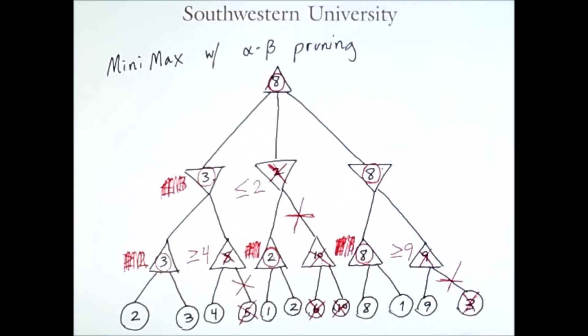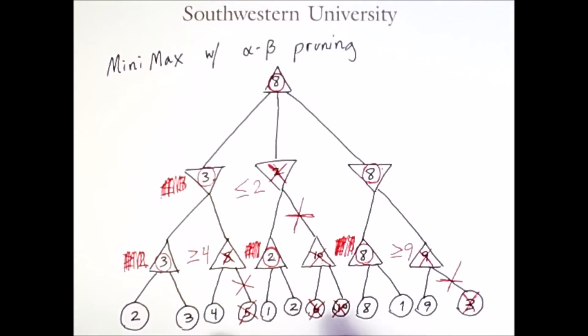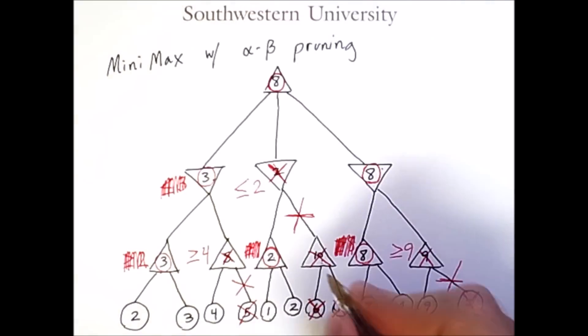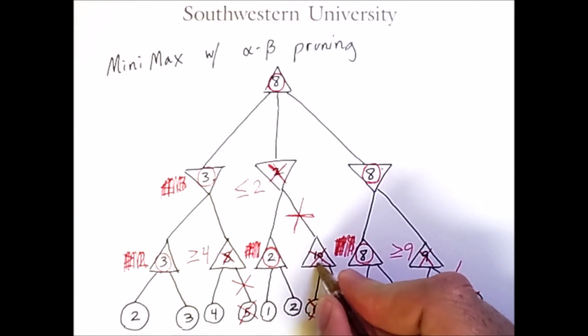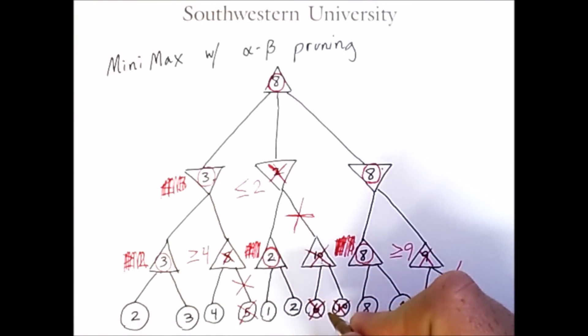We did not have to look at 4 of these child nodes, and we didn't even have to expand one intermediate node to find that information.